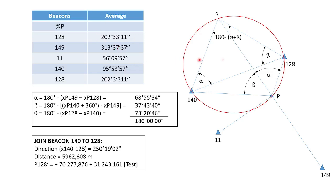These are the averages we had for directions. To determine our alpha, we start with this line — a line is 180 degrees, so all the angles on one side should equal 180. We say P149 minus P128, and it gives us this angle over here. Then we say 180 degrees minus this angle to give us our alpha. For our beta, we want this angle. We will say 140 plus 360 minus 149, which gives us this angle over here. Then we say 180 minus this angle to give us our beta.